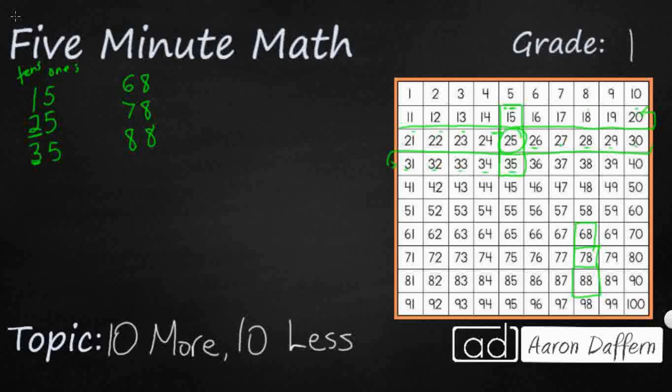I'm going to start with 78. I'm going to count backwards. 1, 2, 3, 4, 5, 6, 7. Go up a row. 8, 9, 10. Yes, it is.